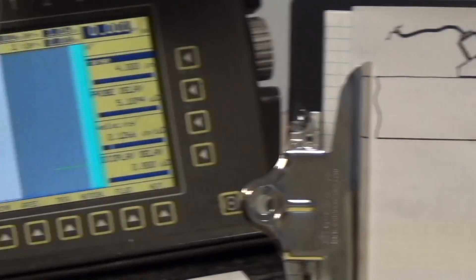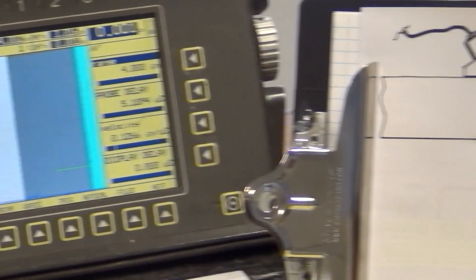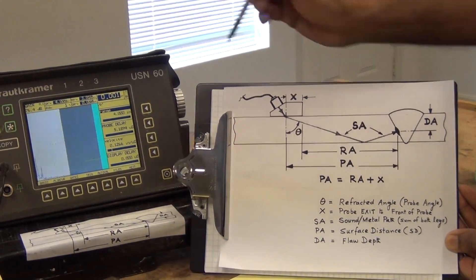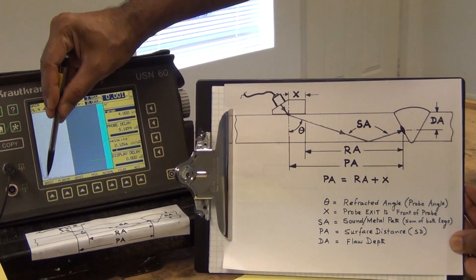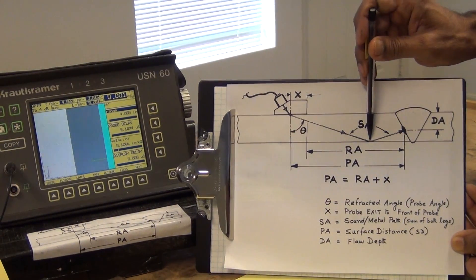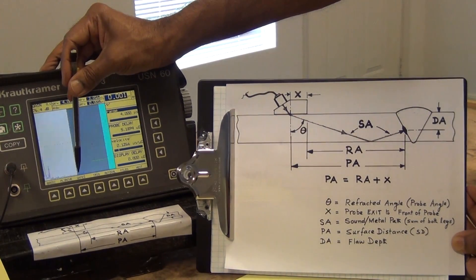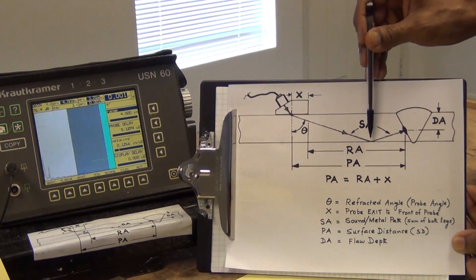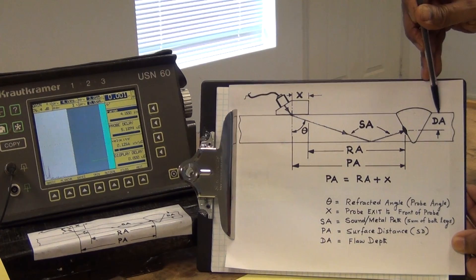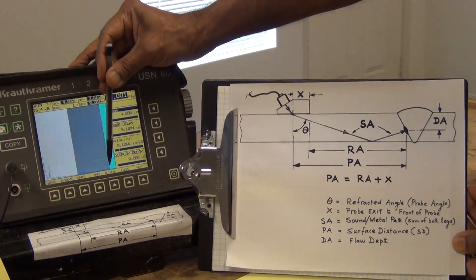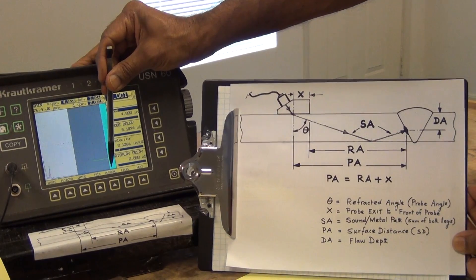So this point on the plate corresponds to this point on the screen. This point on the plate, which is the bottom of the plate, corresponds to that point on the screen. And then the very top, if the sound goes up to here, would be the full V path, and that would correspond to this point on the screen.